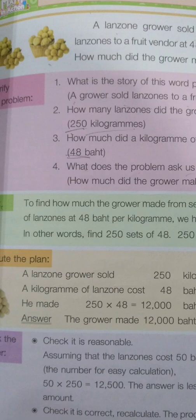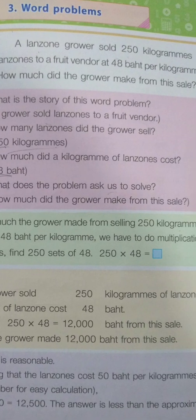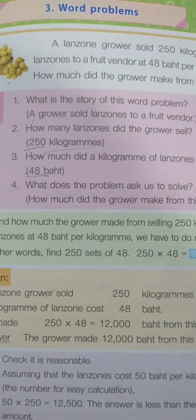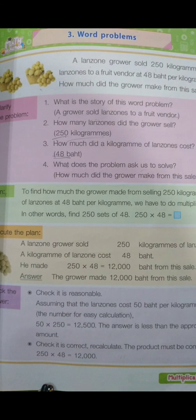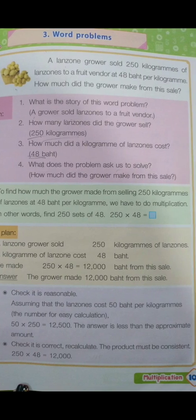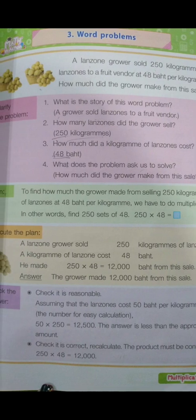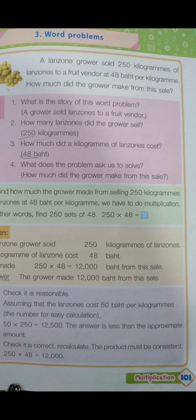Now our plan: to find how much the grower made from selling 250 kilograms of lanzones at 48 baht per kilogram, we have to do multiplication. In other words, find 250 sets of 48 — so 250 times 48 equals what?